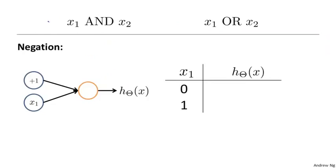In the last video, we saw how a neural network can be used to compute the functions x1 AND x2 and the function x1 OR x2 when x1 and x2 are binary, that is when they take on values of 0 or 1.